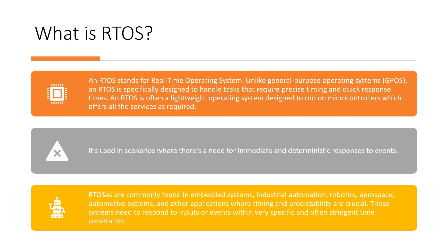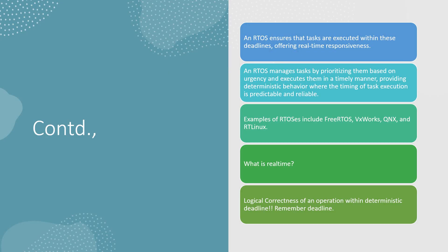The term 'real-time' itself has to be defined carefully. Real-time is nothing but logical correctness of the operation within a deterministic deadline. RTOS is expected to provide immediate and deterministic responses to events. RTOS is most commonly used in embedded systems, industrial automation, robotics, aerospace, automotive systems, and other applications where timing and predictability are crucial. These systems need to respond to inputs or events within a very stringent specified time frame. RTOS ensures tasks are executed within deadlines, manages tasks by prioritizing them based on urgency, and provides deterministic behavior where task execution timing is predictable and reliable.